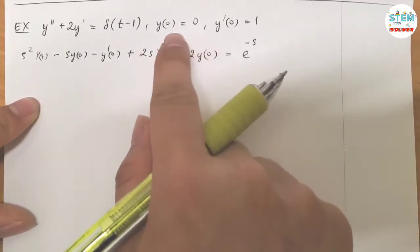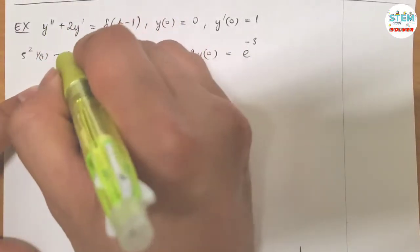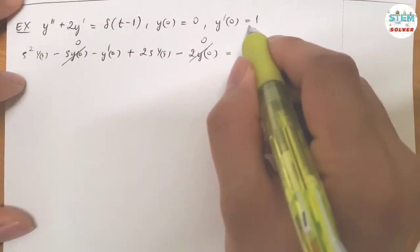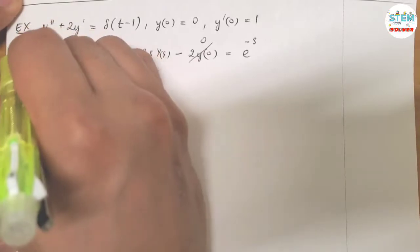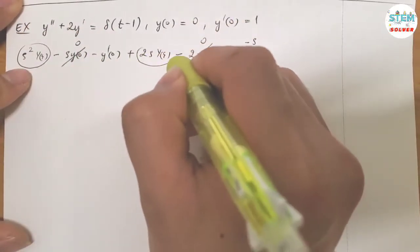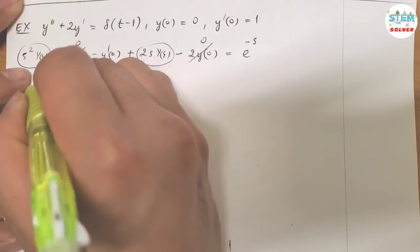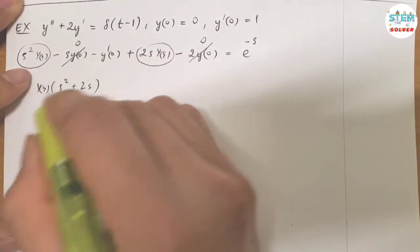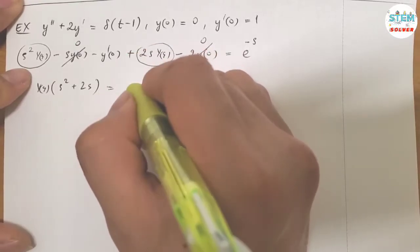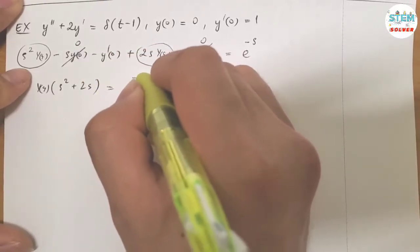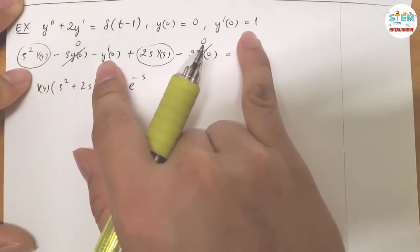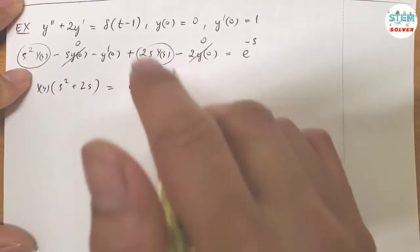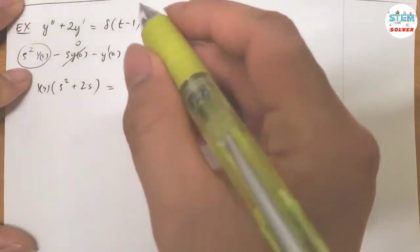Now plug in the conditions. Y of 0 equals 0, so this becomes 0, this becomes 0, and Y prime of 0 equals 1. Plug in 1 here, negative 1, move to the other side, positive 1.